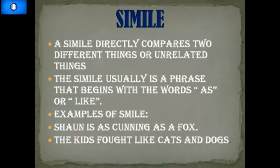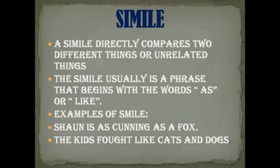Now let us see the first figure of speech — it's simile. A simile directly compares two different or unrelated things. A simile is usually a phrase that begins with the words 'as' or 'like.' Here is an example: 'Sean is as cunning as a fox.' Here we are comparing Sean's cunningness with a fox — an animal that is famous for its cunningness and is a very sly animal.